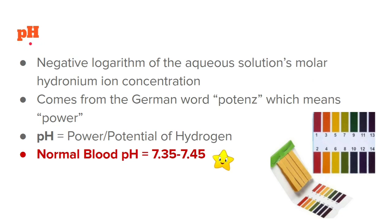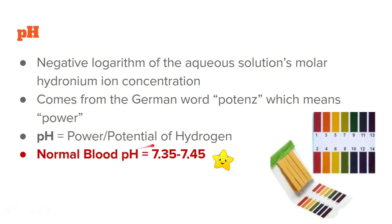What is pH? pH is the negative logarithm of the aqueous solution's molar hydronium ion concentration. Additional information: pH comes from the German word 'potenz,' which means power. That is why pH is known as the power or potential of hydrogen. The meaning of the word pH is power of hydrogen or potential of hydrogen.